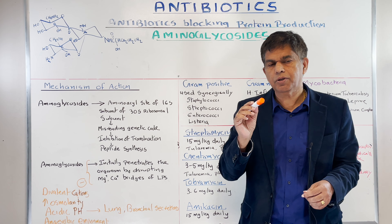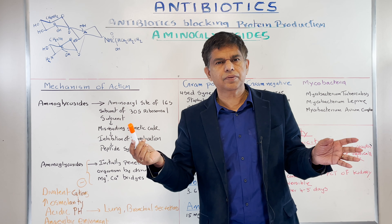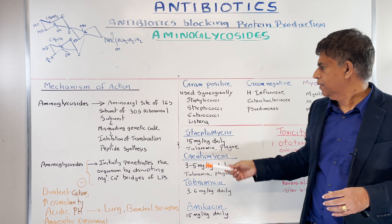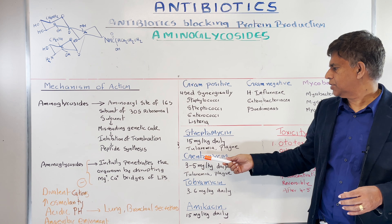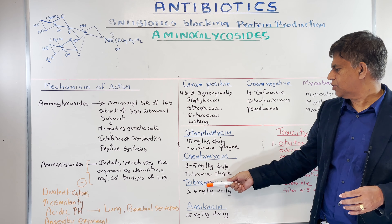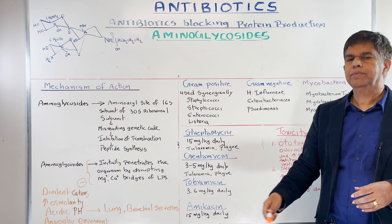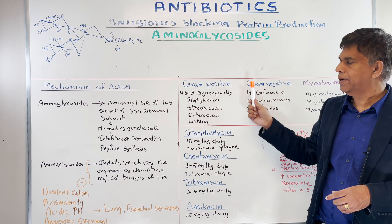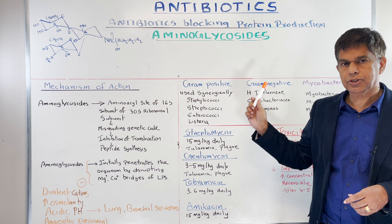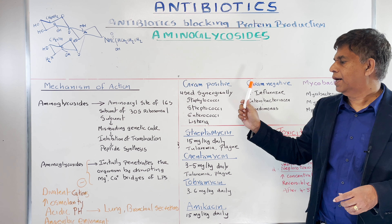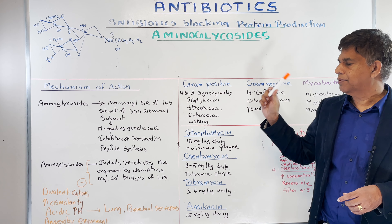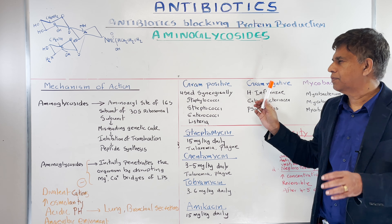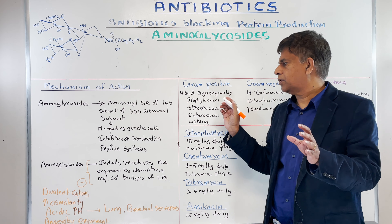When you talk about aminoglycosides, there are about four to five drugs you have to know. You've got streptomycin, gentamycin, tobramycin, and amikacin. It provides good gram-negative coverage — specifically aerobic gram-negative coverage overall.